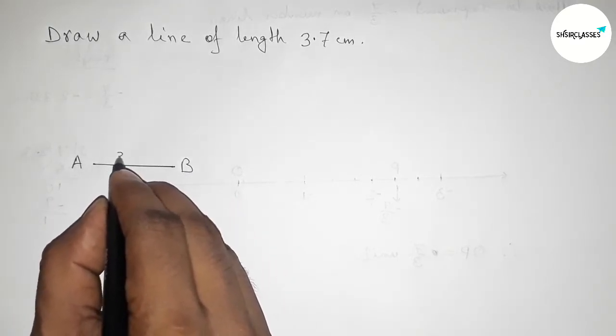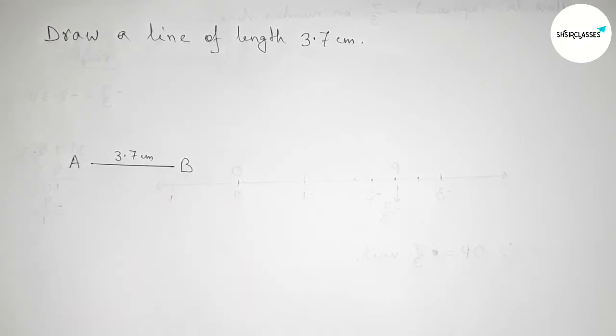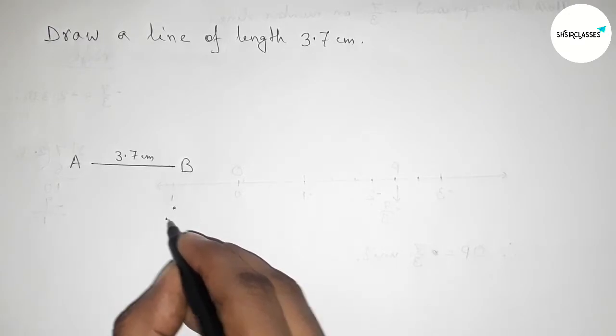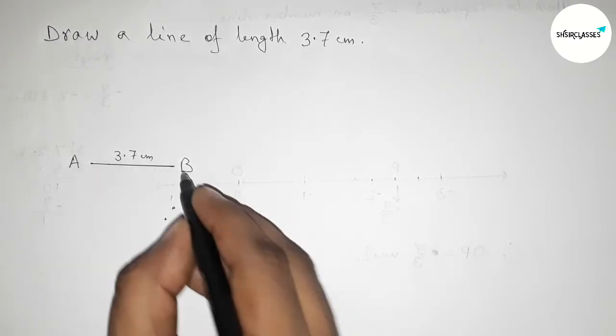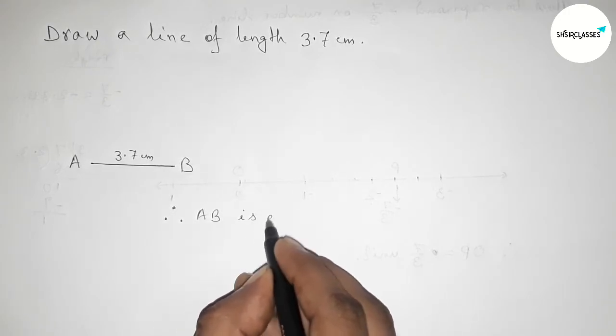So AB is a line of length 3.7 centimeter.